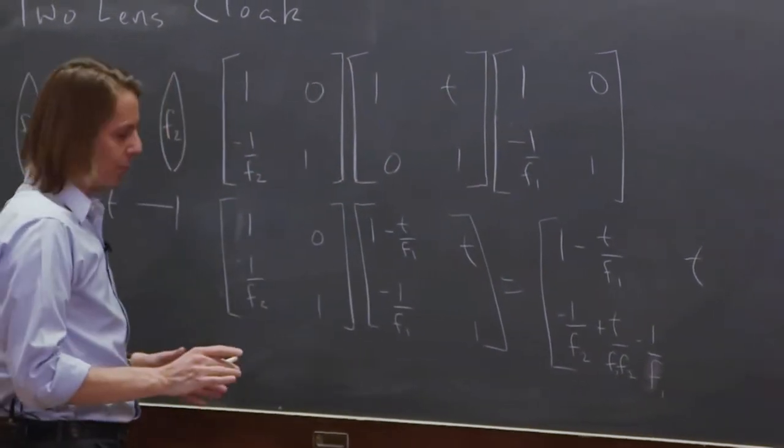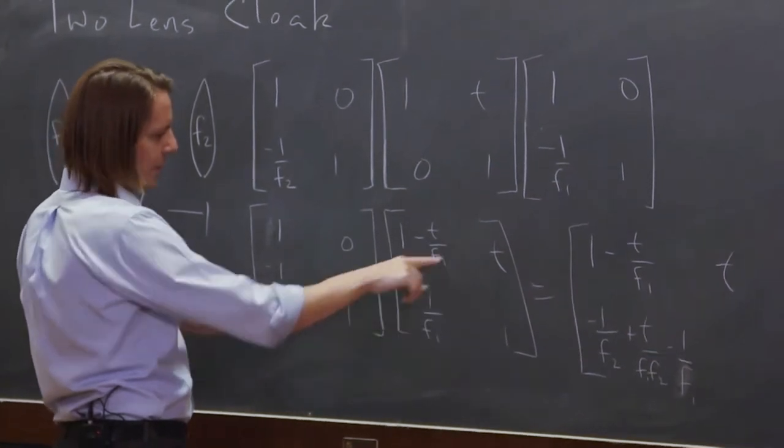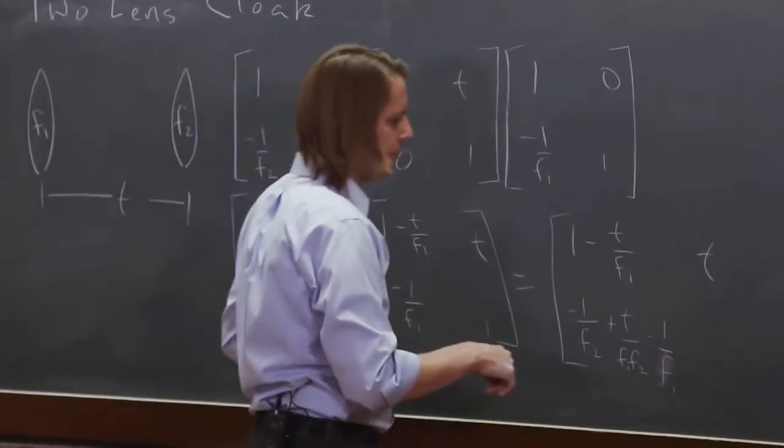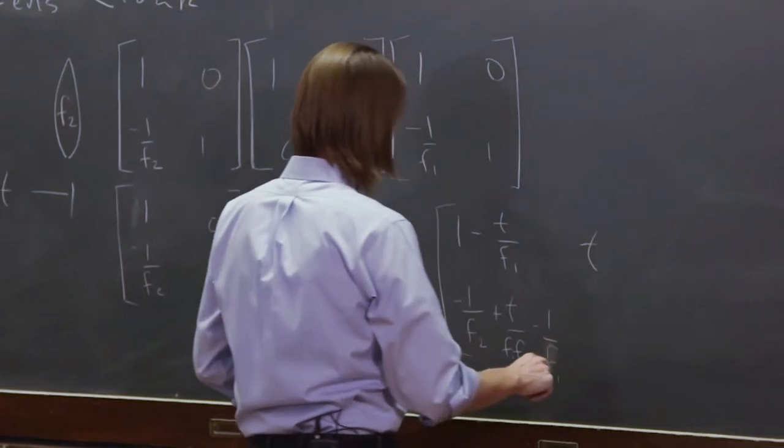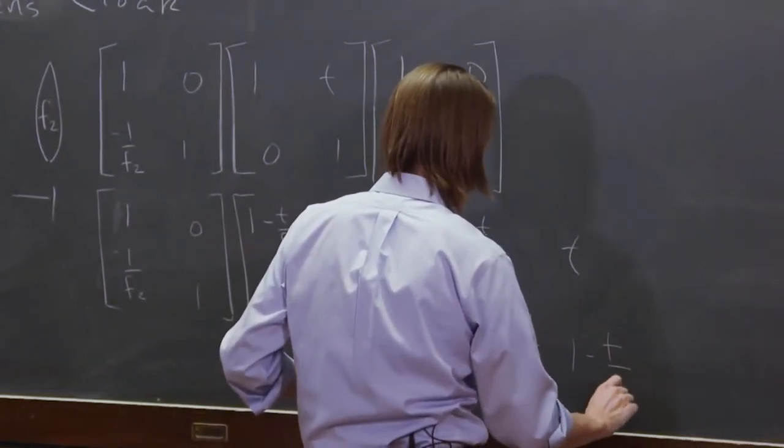Okay, so that's a big term, three terms in that one. And then this one is minus T over F2 plus 1. Or if I wanted to write it similar to that one, I'd say 1 minus T over F2.